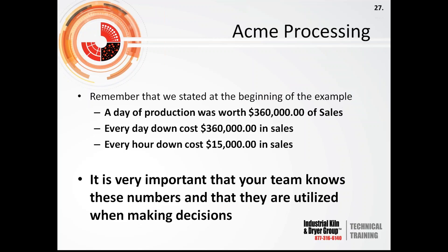Remember from the beginning of the example: a day of production was worth $360,000 in sales. Every day down costs $360,000 in sales; every hour the system is down at Acme Processing is a loss of $15,000 in sales. These numbers are extremely important when looking at reliability because they go right to the bottom line, and help you explain to others that increasing reliability can significantly help the company make more money, helping people keep their jobs and making everything more secure.